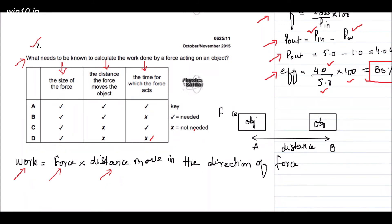Suppose we have an object at position A. On application of force, the object displaces from point A to point B, covering some distance. To calculate work done, we need only two things: how much force there is and the distance covered by the object. Time is not needed. So any option that includes time as a required quantity is not correct.